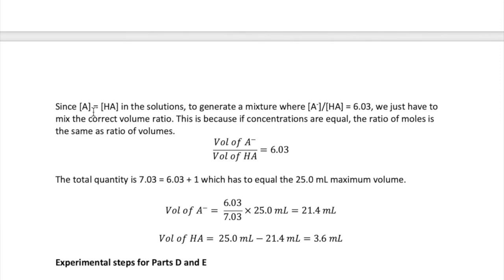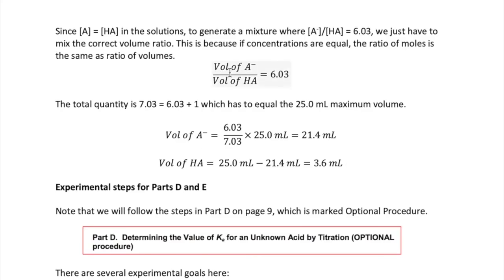Now, recall that in part D, we had created our solutions of A minus and HA to have the same concentration. Based on the definition of molarity, if the concentrations are equal, then the ratio of the number of moles of A minus to HA is the same as the ratio of the volumes of A minus to HA. That means I can rewrite my equation above as ratio of volumes of A minus to HA to be 6.03 to 1.